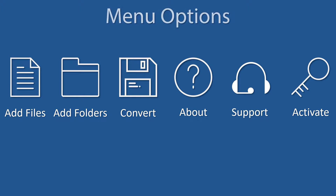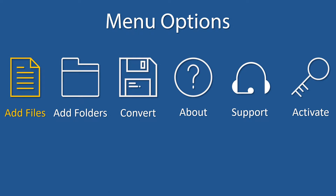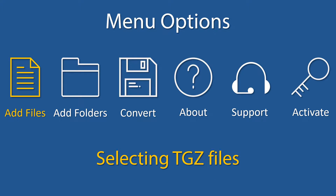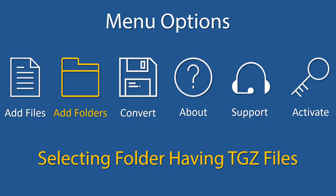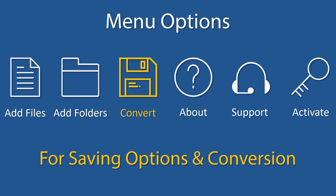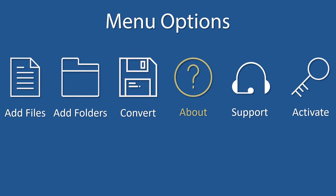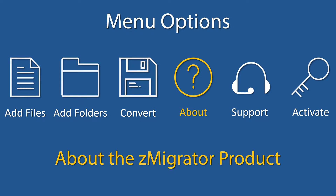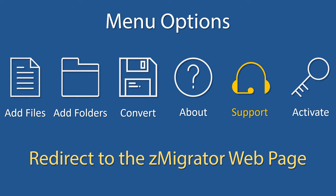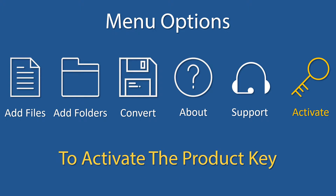The tool comes with a simple and user-friendly interface and the navigation menu is available on the top panel. Let's check the navigation menu options: Add Files for selecting single or multiple TGZ files; Add Folders for selecting a folder containing TGZ files; Convert to navigate to the converting or saving options panel — before that, the user needs to select input folders; About for information about the Z-Migrator product; and Support, which redirects to the Z-Migrator web page.